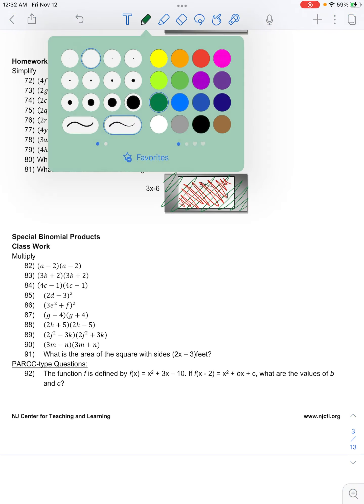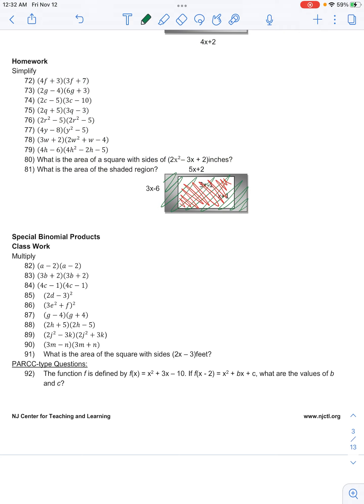We'll have the area of green as the length times width, so that'll be 5x plus 2 times 3x minus 6. This will simplify—well, first of all we have to distribute, so we'll have this 5x term times parenthesis and then 2 times parenthesis.